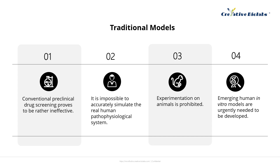Organoid chips derived from human cells boast heightened humanization, convenience, and cost-effectiveness. They are poised to offer novel avenues for enhancing the clinical translation rate in new drug research and development.